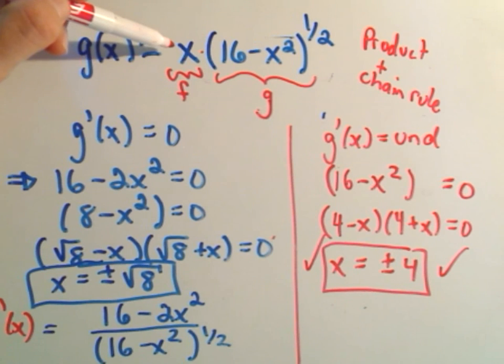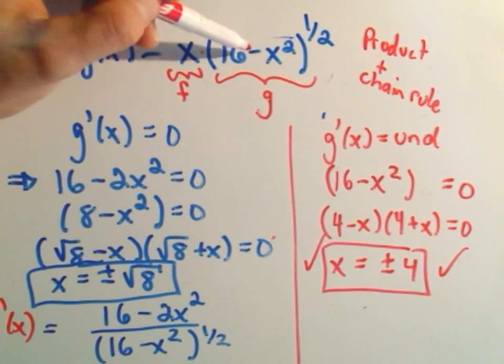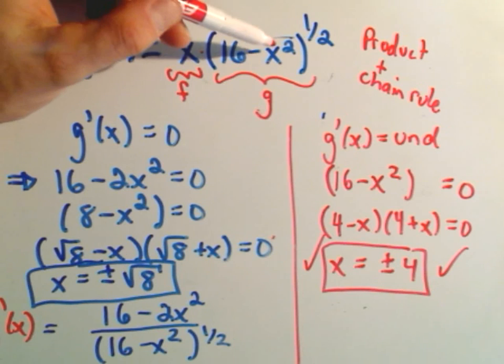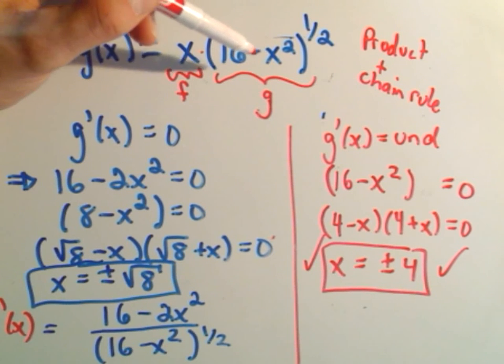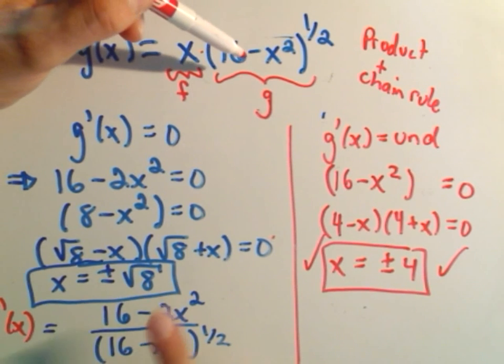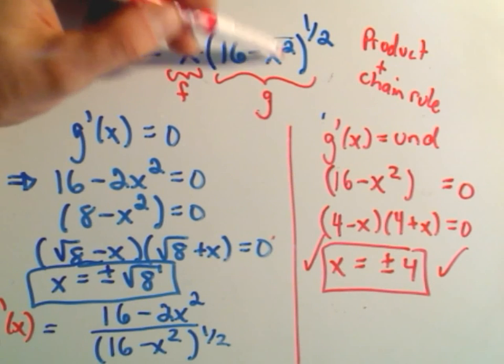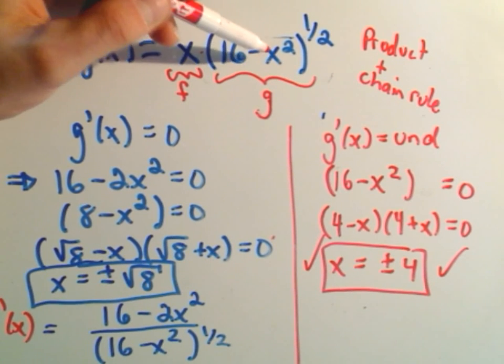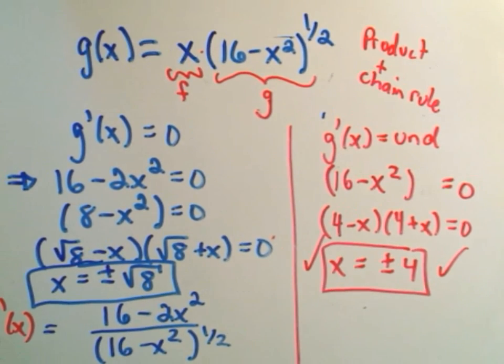Likewise, if I plug in positive or negative square root of 8, I'll get positive or negative square root of 8 out front. Then whatever one we plug in, positive or negative, we square it. Then we'll always get 16 minus 8, which is just 8 to the 1 half, which is defined.